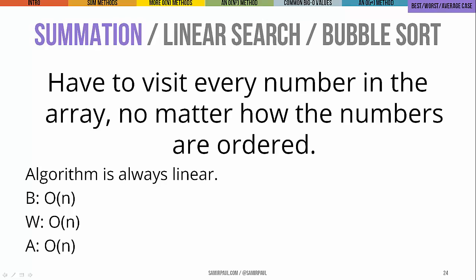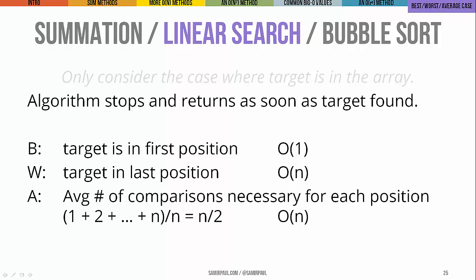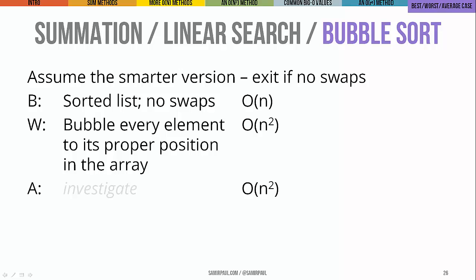Let's look at three examples of best/worst/average case analysis. For summation: the algorithm must visit every single number in the array no matter how many there are or how they're ordered, so it's always linear. Its best case, worst case, and average case are all O of n. For linear search — assuming the target is in the array — the algorithm stops as soon as it finds the target. In the best case the element is at position zero: constant time. In the worst case it's at the end of the array: O of n. On average it's somewhere in the middle, also roughly O of n, since n over 2 simplifies to O of n in our hand-wavy approach.